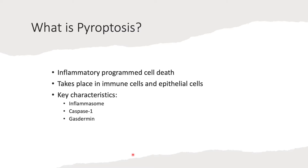What is pyroptosis? Essentially, pyroptosis is an inflammatory programmed cell death. It takes place in immune cells and some epithelial cells. Some key characteristics of pyroptosis are the inflammasome, caspase-1 in particular, and gasdermins. These are common indicators and keywords to look for in exam questions or to mention in answers relating to pyroptosis.